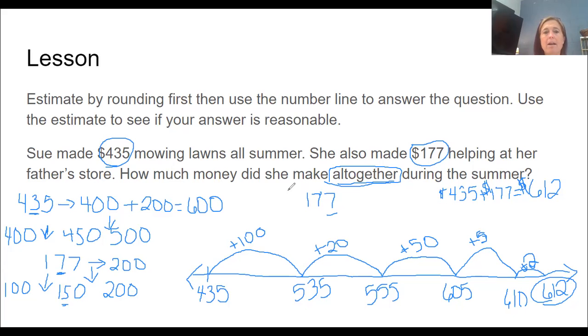Now let's look back at our estimate. Our estimate was 600. That means our answer needs to be a little less or a little more than 600. Is that true? Yes, 612 is the actual answer. So we can be pretty sure that our answer is correct because it's very close to the estimate of 600.